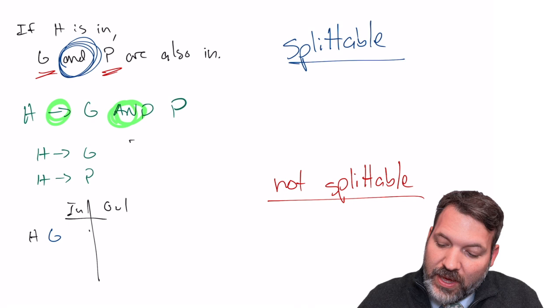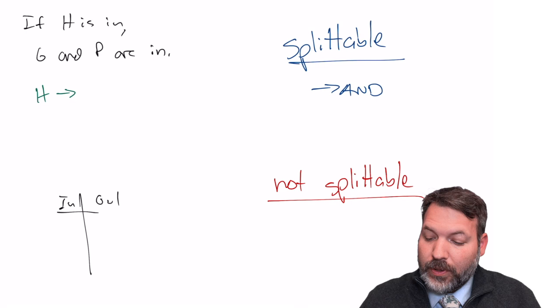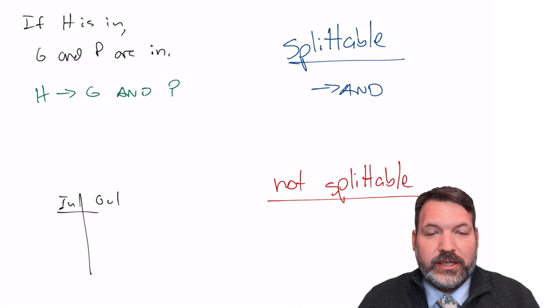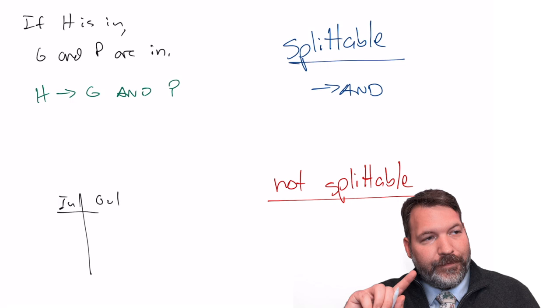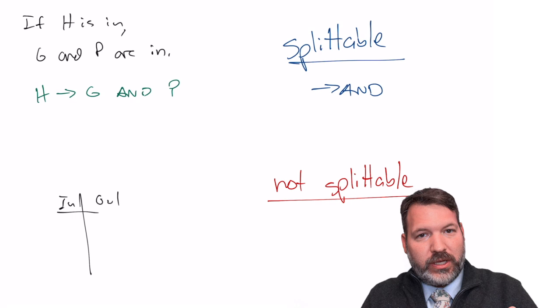When you can see AND following the arrow, that is a splittable conditional statement. We write two separate conditionals: 'if H is in, G is in' and 'if H is in, P is in.' Now let's talk about other splittable scenarios. Consider the contrapositive: flip and negate. For example, 'if you were born in Dallas then you were born in Texas' — the contrapositive is 'if you weren't born in Texas then you weren't born in Dallas.'